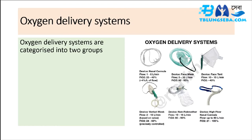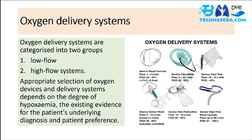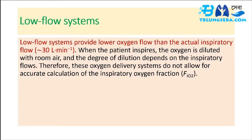Oxygen delivery systems are categorized into two groups: low flow and high flow systems. Appropriate selection depends on the degree of hypoxemia, existing evidence for the patient's underlying diagnosis, and patient preference. Low flow systems provide lower oxygen flow than the actual inspiratory flow (30 L/min). When the patient inspires, the oxygen is diluted with room air, so these systems do not allow for accurate calculation of the inspiratory oxygen fraction (FiO2).